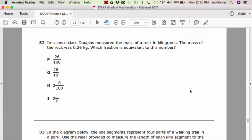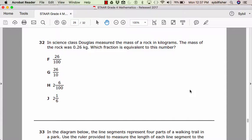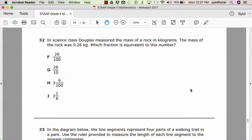Number 34. In science class, Douglas measured the mass of a rock in kilograms. The mass of the rock was 0.26 kilograms. What fraction is equivalent to this number? F, 26 over 100. G, 26 over 10. H, 2 and 6 over 100. J, 2 and 1 sixth.